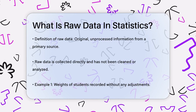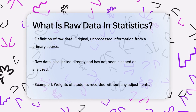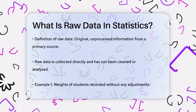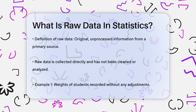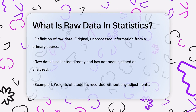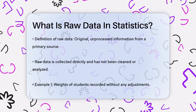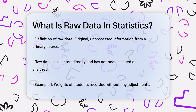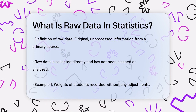For example, if you're collecting data on the weights of students in a classroom, the raw data would be the individual weights as they are recorded, without any calculations or adjustments.